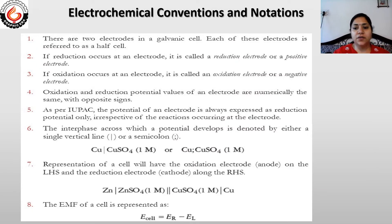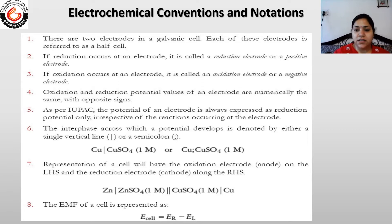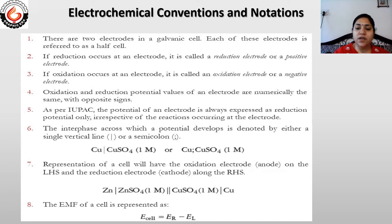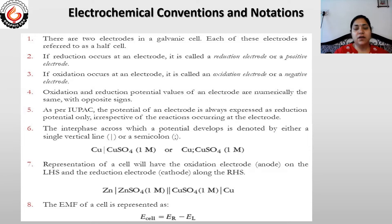Electrochemical conventions and notations are very useful in solving numerical problems because they give the basics about how to write cells, what half cells are, how to write a complete cell, and what the meaning of two lines, one line, or a cell reaction is. Knowing which electrode acts as anode and which acts as cathode is necessary before solving numerical problems. So let us start the electrochemical conventions and notations.